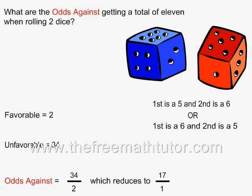Odds against is equal to unfavorable over favorable, which is equal to 34 over 2, and this reduces to 17 over 1.